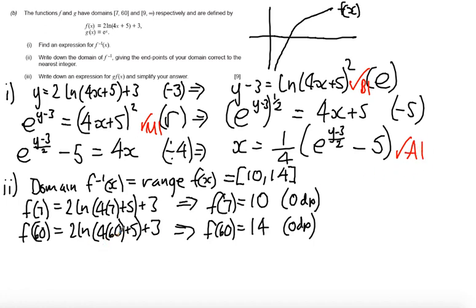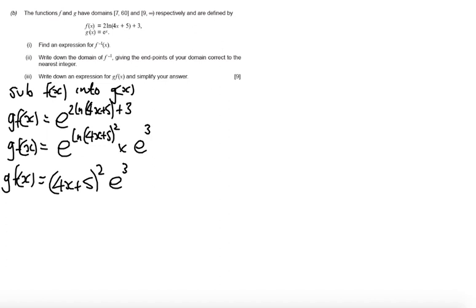Part 2, there is just a standalone mark for getting the lower bound as 10. And there is a standalone mark for getting the upper bound for this domain of f^(-1) is 14. And then finally part 3. Part 3, there is a standalone mark for correctly substituting in the function of f(x) into g(x). There is then a correct mark for getting that you get (4x+5)^2. That is a standalone mark and a correct final mark if the whole expression is correct.